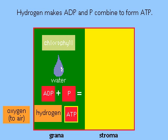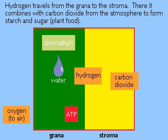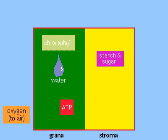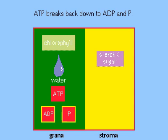In the grana, carbon fixation uses the energy from ATP and another compound, NADPH, to drive reactions that form the nutrients starch and sugar from water and carbon dioxide. The ATP then breaks down to ADP and phosphate.